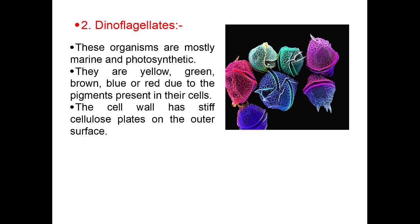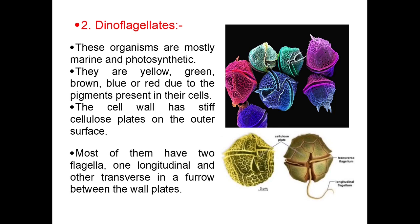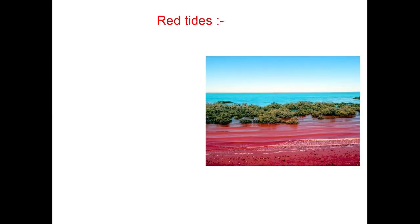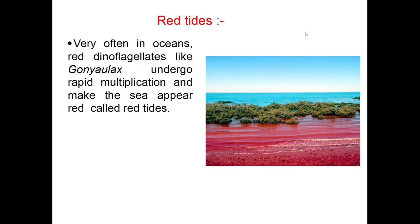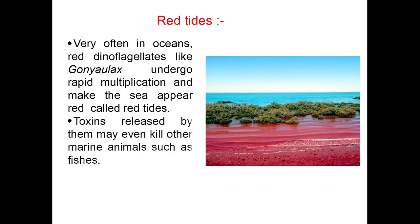The cell wall has stiff cellulose plates on the outer surface. Most of them have two flagella — one longitudinal and one transverse — in a furrow between the plates. Very often in oceans, red dinoflagellates like Gonyaulax undergo rapid multiplication and make the sea appear red, called red tides. Toxins released by them may even kill other marine animals such as fishes.